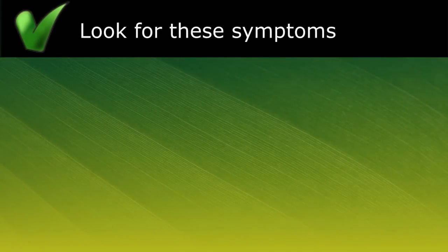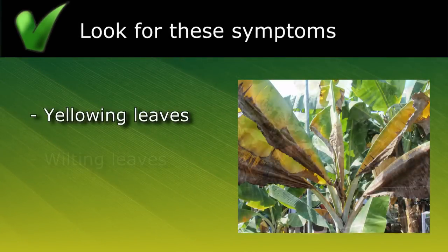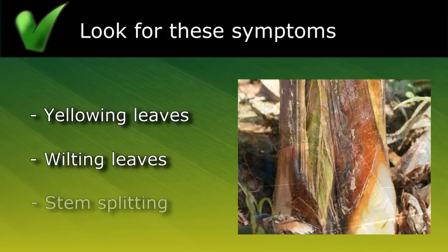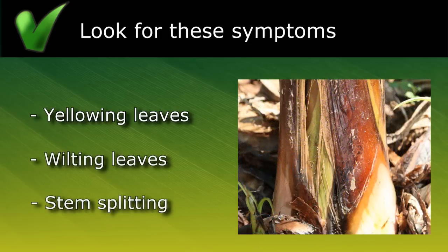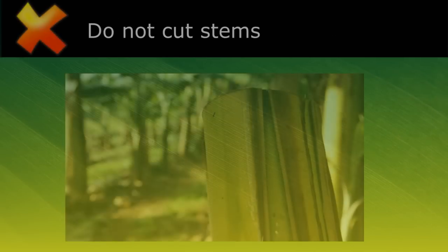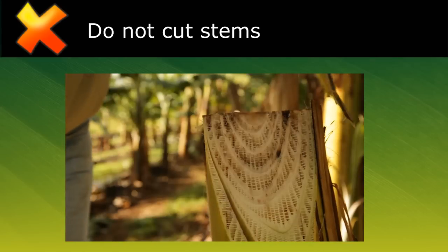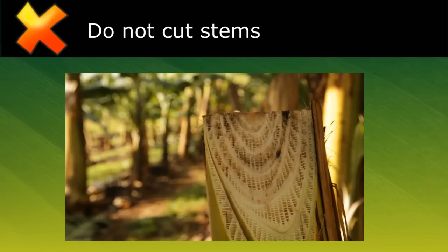Remember to look out for any plants that have yellow leaves, wilting leaves, or stem splitting. Also, if you see a suspect plant, remember: do not cut the stem, as this can cause the disease to spread.